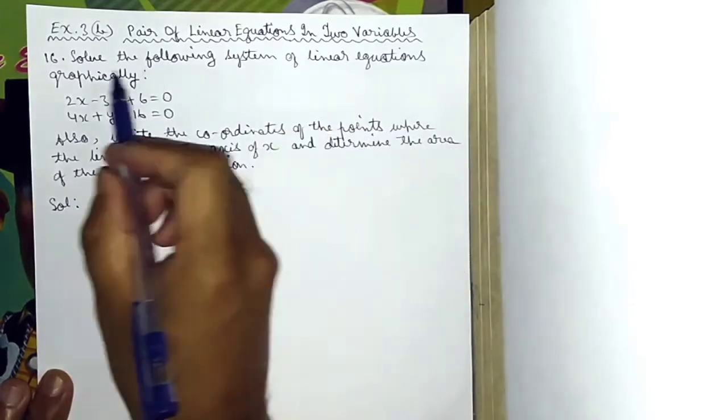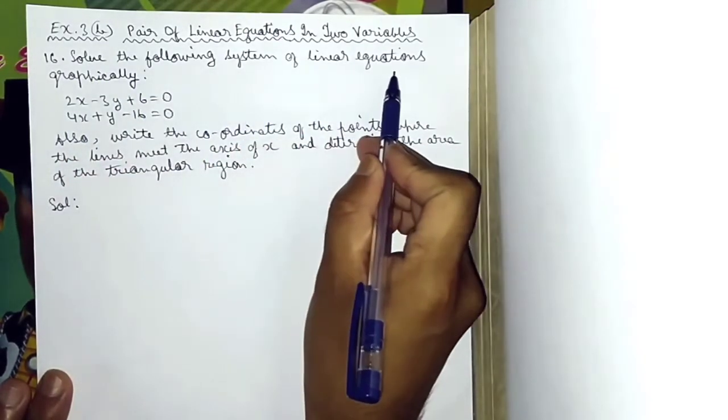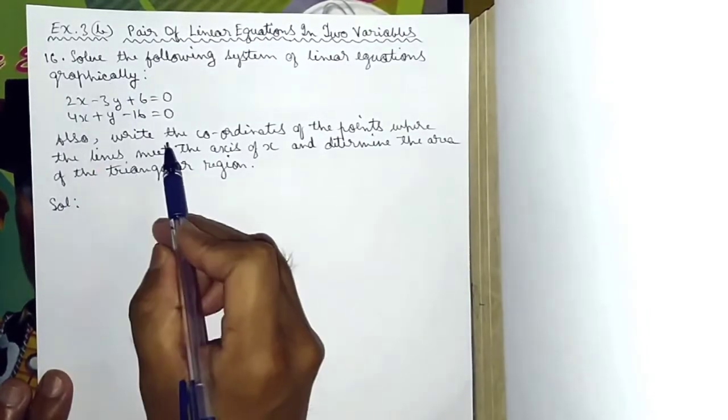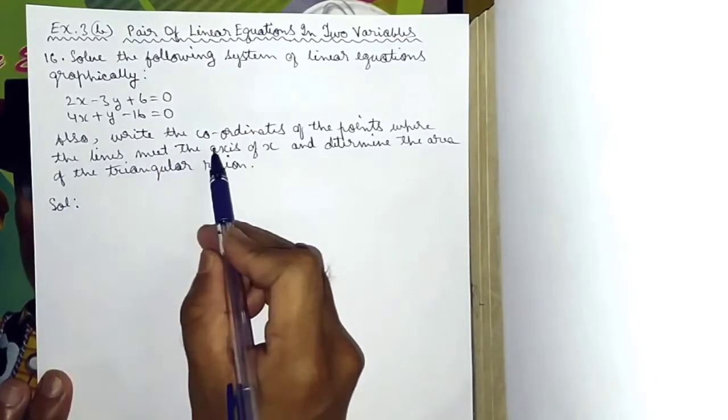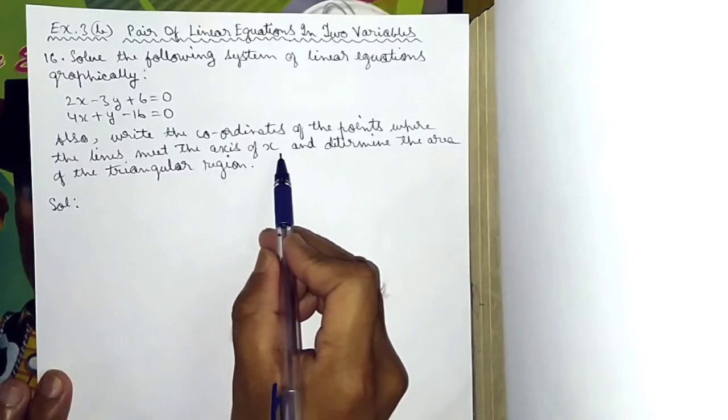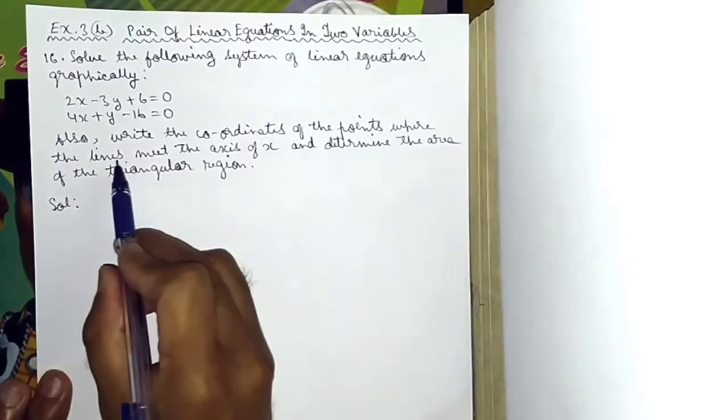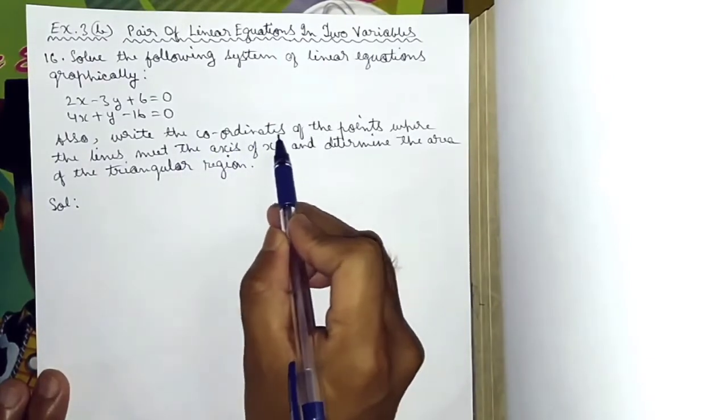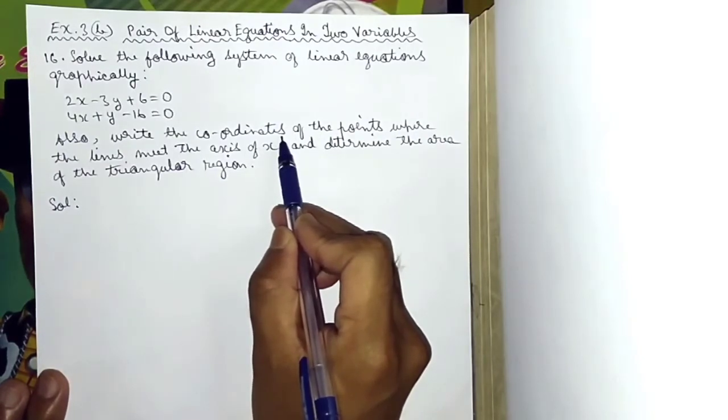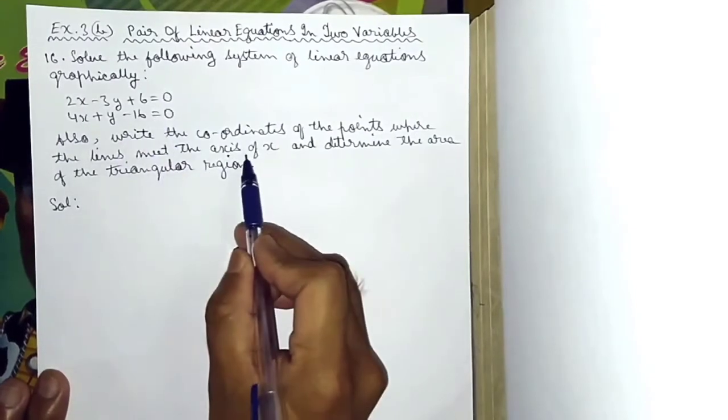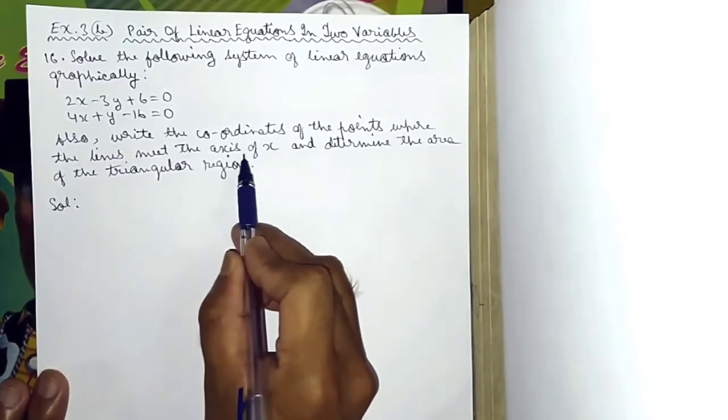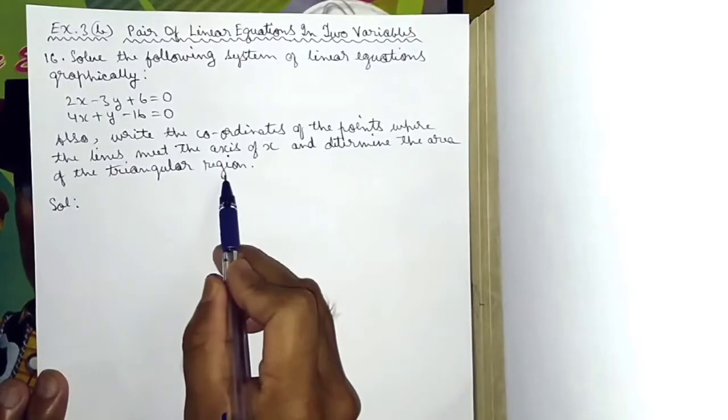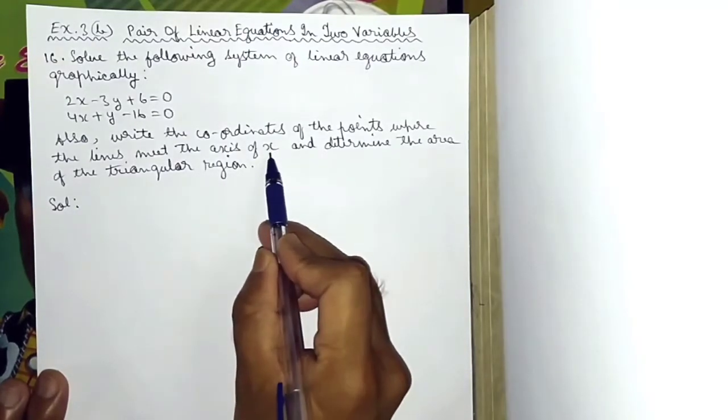Exercise 3B, pair of linear equations in two variables, number 16. Solve the following system of linear equations graphically. Also write the coordinates of the points where the lines meet the axis of x and determine the area of the triangular region. The lines meet the x-axis at certain points, and we need to find those coordinates and determine the area of the triangle formed with the x-axis.